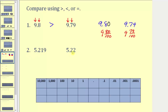For number two, let's compare the place values. Notice how both numbers have a five in the ones place value. Next, both numbers have a two in the tenths place value. But here we have a one in the hundredths place value, and here we have a two in the hundredths place value. Because two is greater than one, five point two two is greater than five point two one nine. Or we can say five and two hundred nineteen thousandths is less than five and twenty two hundredths.